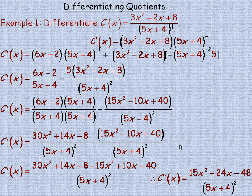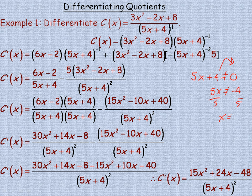There is a restriction on this derivative. It has the same binomial in the denominator as the original function. 5x plus 4 cannot equal 0, so that gives us the restriction: if we move the 4 over, 5x cannot equal negative 4, and dividing by 5, x cannot equal negative 4 over 5. The same binomial appears in the denominator of the derivative as well, so the restriction is the same: x cannot equal negative 4 over 5.